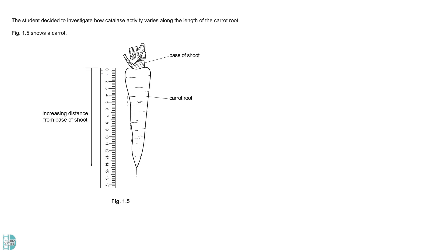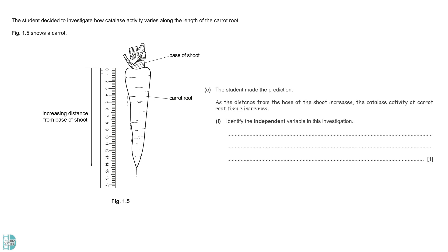The student decided to investigate how catalase activity varies along the length of the carrot root. You are asked to identify the independent variable in this investigation. Since the student changes the distance and investigates how it affects the activity of catalase, the distance from the base of the shoot is the independent variable. The activity of catalase, which is indicated by the time taken for the paper disc to rise to the surface, is the dependent variable.